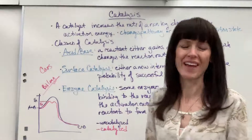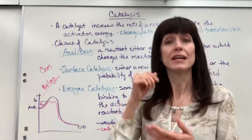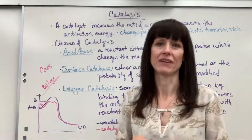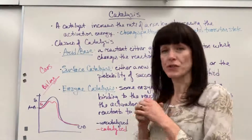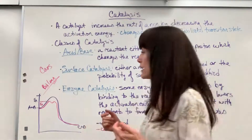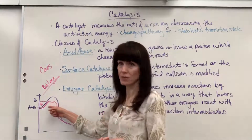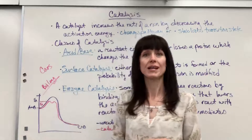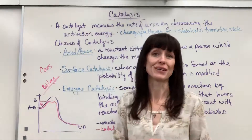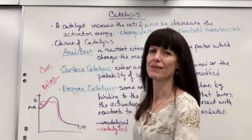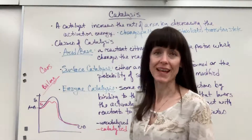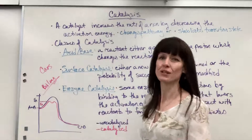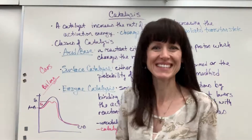Big takeaway on catalysts: they increase the rate, so a reaction goes faster by decreasing the activation energy. The two big reasons are it either changes the pathway that reactants are broken and bonds are formed, or it stabilizes that activated complex so the entire reaction can go faster. Love that we have catalysts. Have a great day! If you have other questions on activation energy or anything with rate, look under my playlist on rate. Thanks.